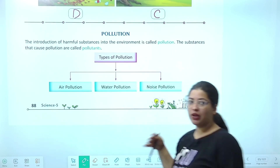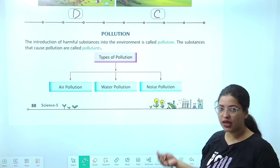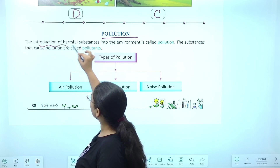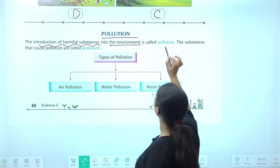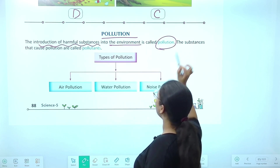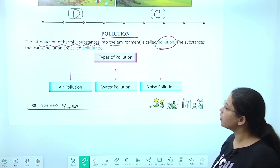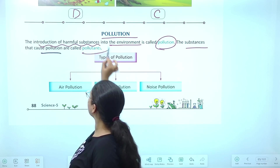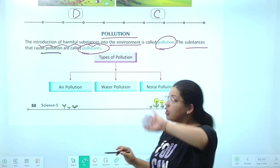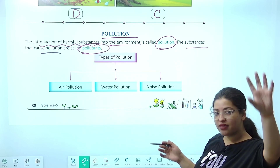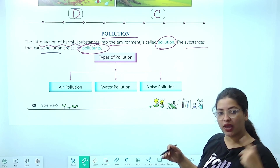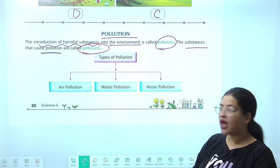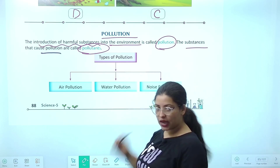Pollution kya hota hai? Pollution ko hindi mein hum kehte hain pradushan. Pollution — the introduction of harmful substances into the environment is called pollution. The substances that cause pollution are called pollutants. Pollution matlab harmful substance ka environment mein hona kehlata hai pollution, but wo jo harmful substance hai jo pollution karata hai, unhe kehte hain pollutants.